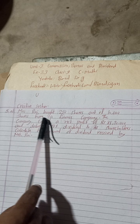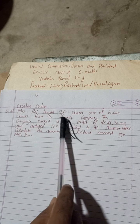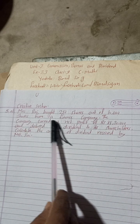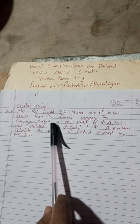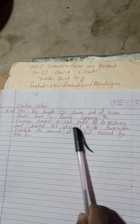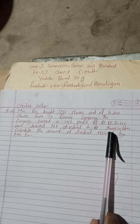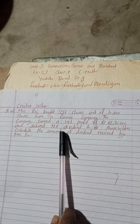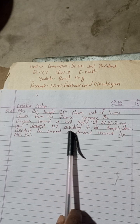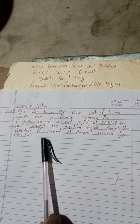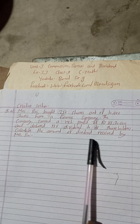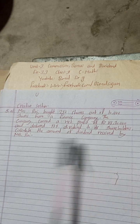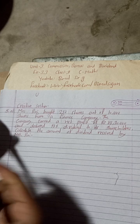Question 5A: Mrs. Rai bought 250 shares out of 10,000 shares from a finance company. The company earned a net profit of Rs 85,20,000 and declared 17% dividend to its shareholders. Calculate the amount of dividend received by Mrs. Rai. Now, solution: